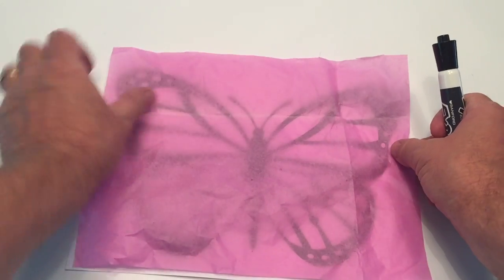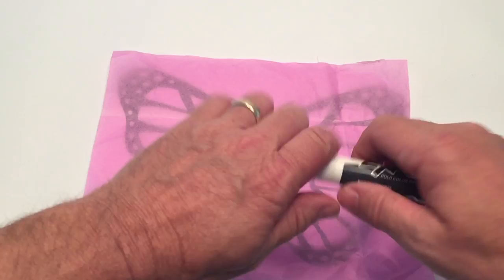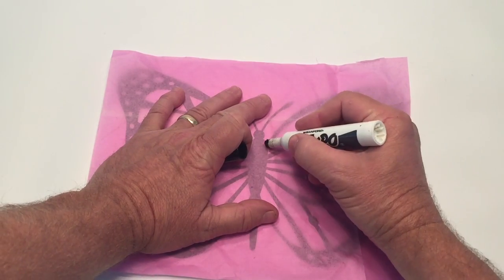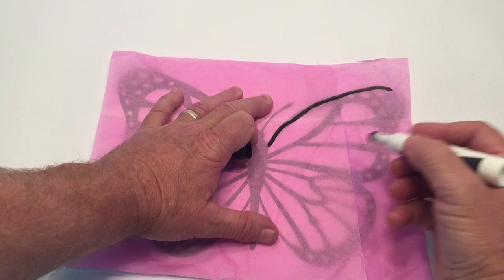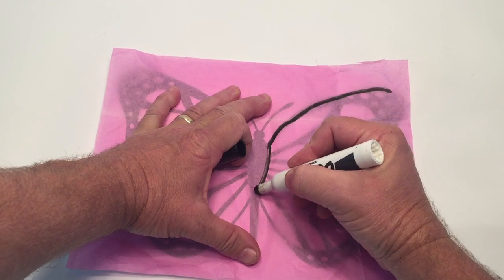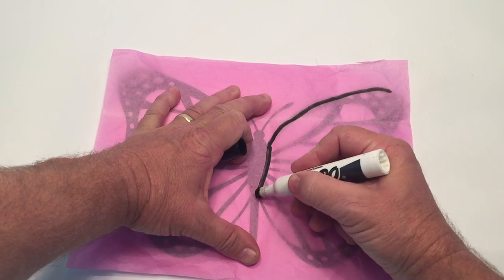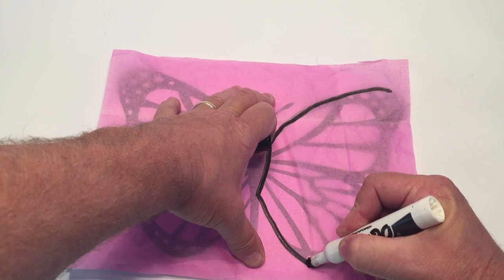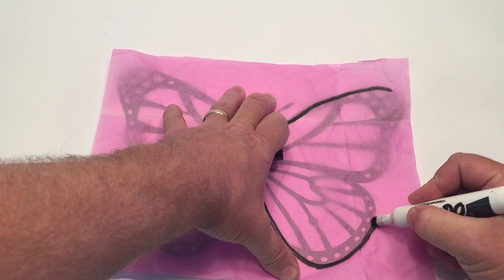I'm showing you here that I'm just going to trace it. So you put down the tissue paper and then trace out the butterfly you want. You could go into as much detail as you want. You do need the body piece cut out.